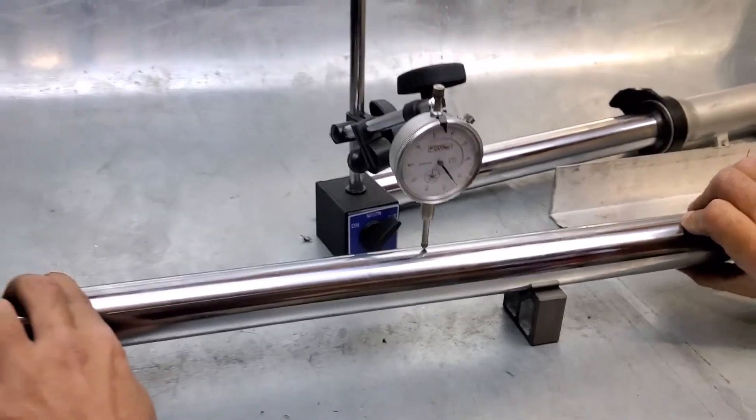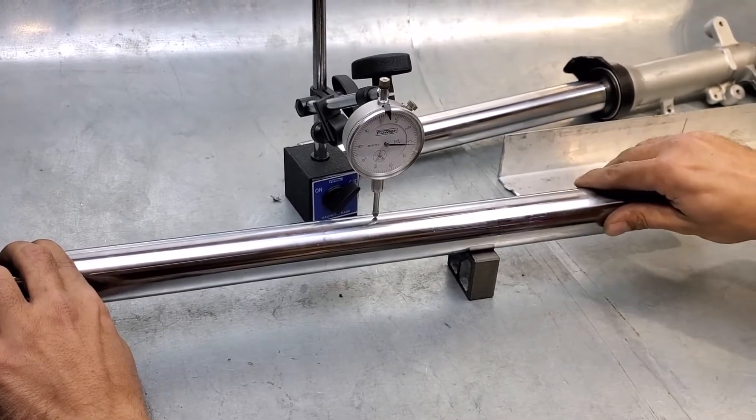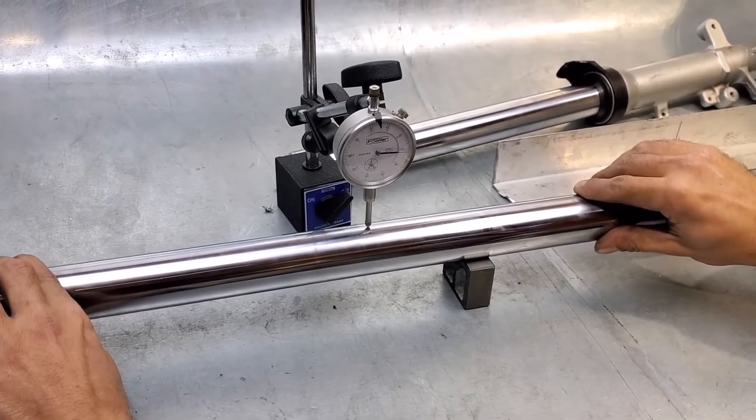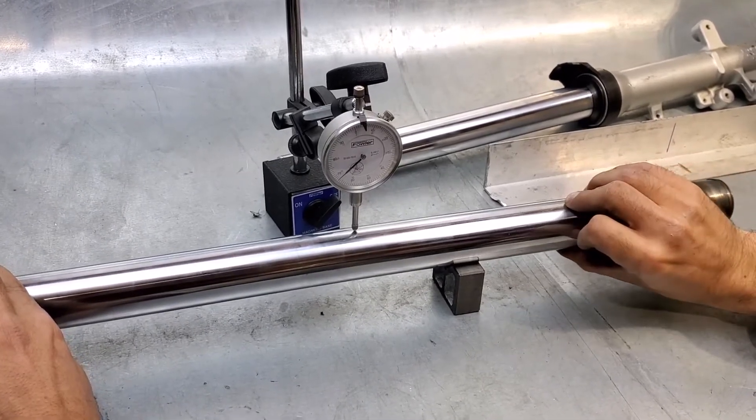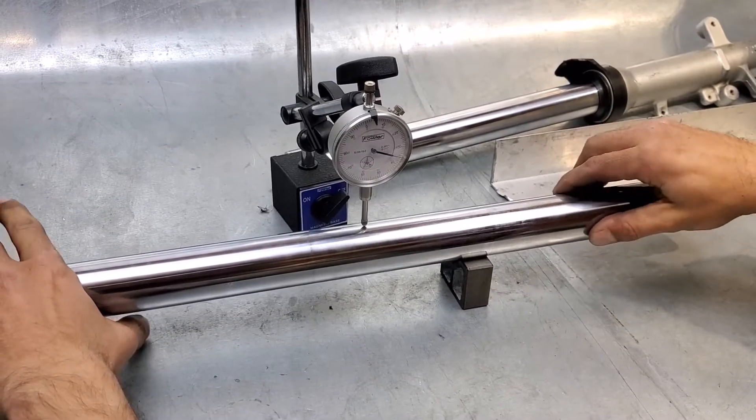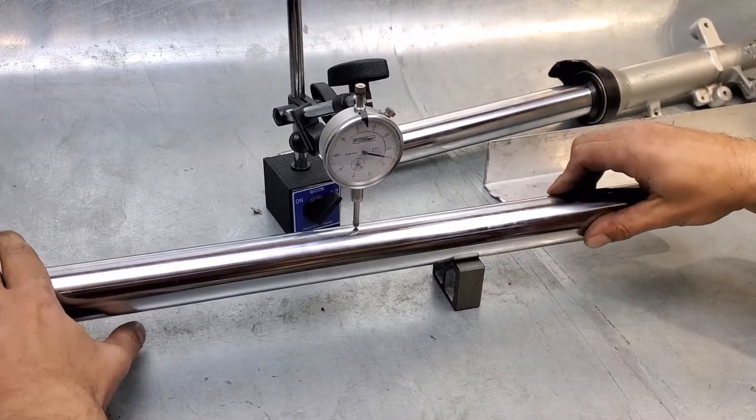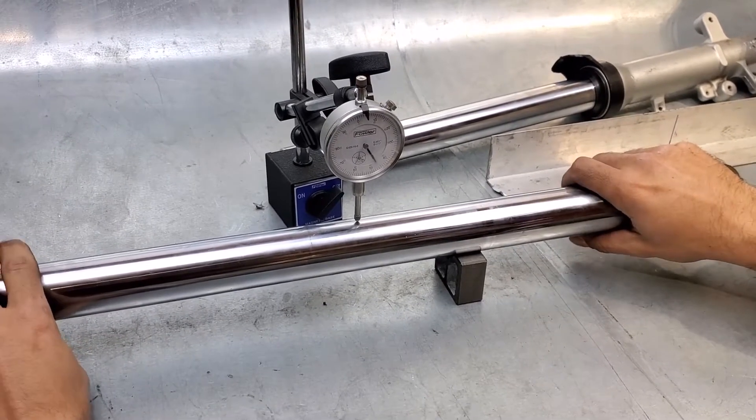So as I'm turning it you can see the needle move back and forth. So it's gonna have a high spot and a low spot. As I'm turning it the needle's really walking around. This fork is rolling around between 35 and 70 so it's like thirty-five thousandths out, definitely not something that you'd want to use.